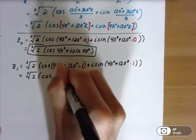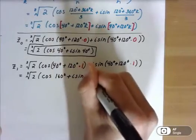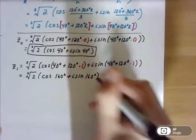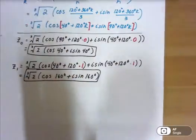And now that's just going to be the cube root of 2 times cosine, now it's 40 plus 120, which is 160 degrees, plus i sine of 160 degrees. There's our second complex root.